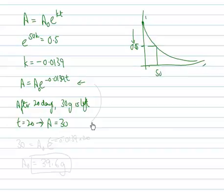Let's plug that back into this function, and we get that 30 equals a0, which we still don't know, times e to the minus 0.0139 times 20. Now we can plug that into the calculator, and we get the initial value is around 40 grams, let's say 39.6 grams.